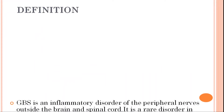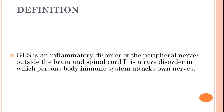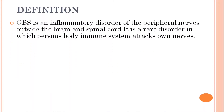From the exam point, this topic is very important. First of all, we will see about the definition of Guillain-Barré syndrome. Guillain-Barré syndrome is an inflammatory disorder of the peripheral nerves which are outside the brain and spinal cord. It is a rare disorder in which a person's body immune system attacks all nerves.